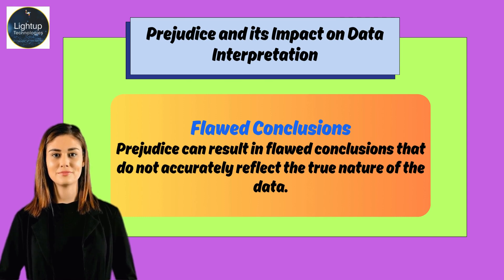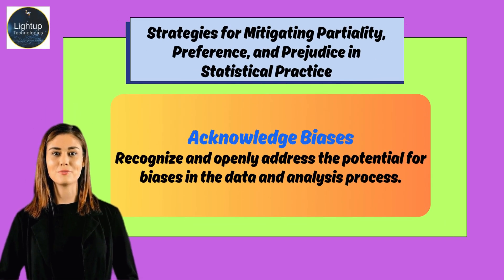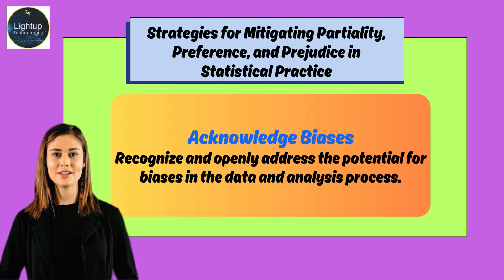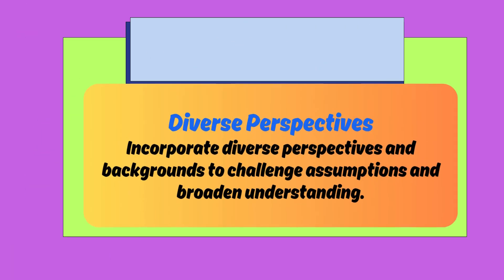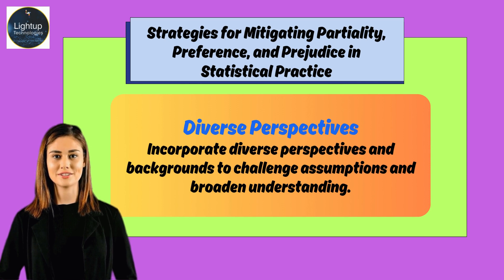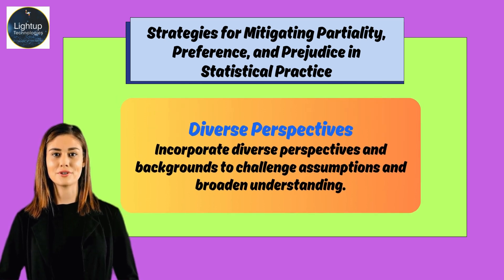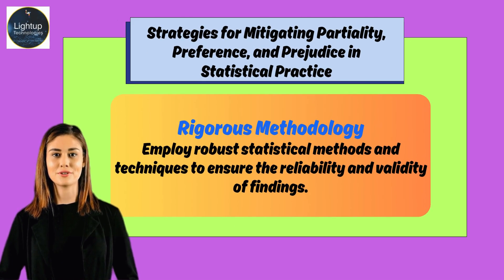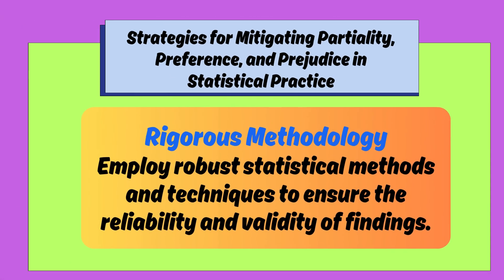Prejudice can result in flawed conclusions that do not accurately reflect the true nature of the data. Strategies for mitigating partiality, preference, and prejudice include: acknowledging bias openly in the data and analysis process, incorporating diverse perspectives and backgrounds to challenge assumptions, and employing robust statistical methods to ensure the reliability and validity of findings.